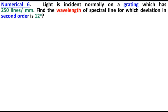Numerical 6. Light is incident normally on a grating. When we write grating, we have to write which formula we use: d sin theta equals m lambda. This is also question number 5. The grating has 250 lines per millimeter. Find the wavelength of spectral line for which deviation in second order is 12 degrees.